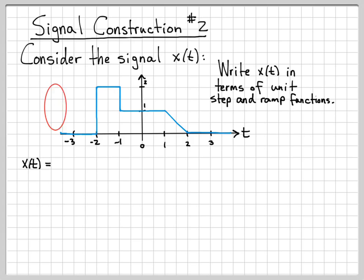So just like before, I like to start at the left and work myself to the right, and we'll add in terms to this expression that we're going to develop that account for each change in the signal value. So originally over here on the left, x(t) is zero, and then at time minus two, something happens. And what happens is a step.